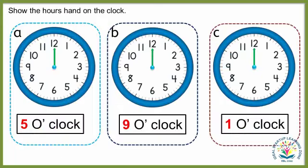Let's have another activity — show the hour's hand on the clock. Look at each clock and show the hour's hand. Clock A: the time is 5 o'clock. Show the hour's hand.